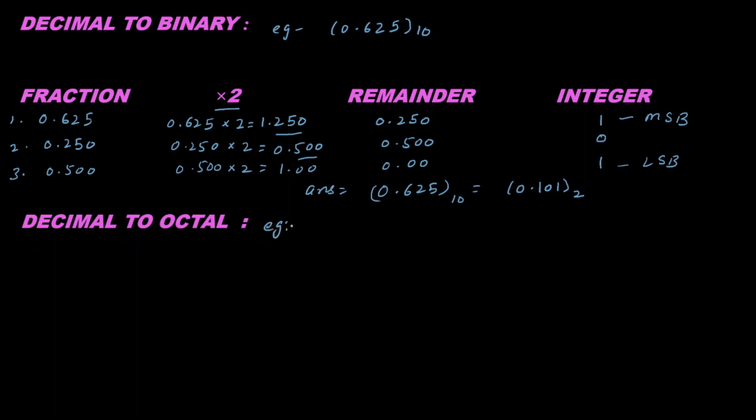Next, I will discuss decimal to octal. For this, we are going to consider one example. Let 0.45 be a decimal number. In this case, draw this table again, and first write the fraction part here.